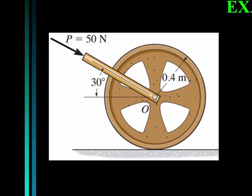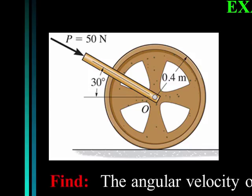Here we have a 50-kilogram wheel subjected to a force of 50 newtons at an angle of 30 degrees. The radius of gyration about its mass center is 0.3 meters. Find the angular velocity of the wheel after it has rotated 10 revolutions, starting from rest and rolling without slipping. Since the problem involves distance — 10 revolutions — the principle of work and energy is the quickest approach. When you see a problem involving forces and distances, work-energy is probably the way to go.